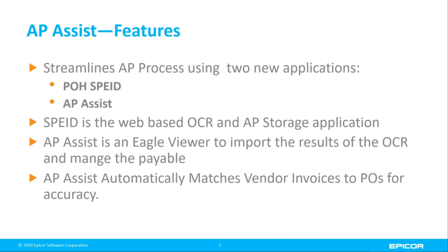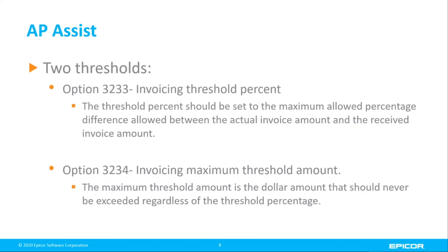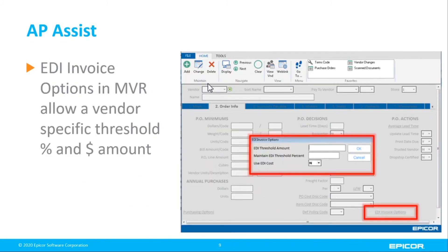Online you will use the Speed application, which is where we do the OCR character recognition of the data from the vendor invoice. Then AP Assist is a viewer in Eagle where we import what we collect from the Speed application and compare it to your PO to make a match. In the case that there's not a match, we would use advanced receiving to make corrections. The tolerance levels include a percentage as well as a dollar amount. The dollar amount will never be exceeded regardless of the percentage. You can set these at a global level or at the vendor level in vendor maintenance.